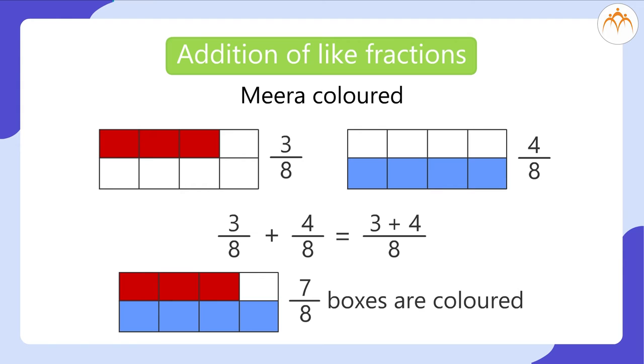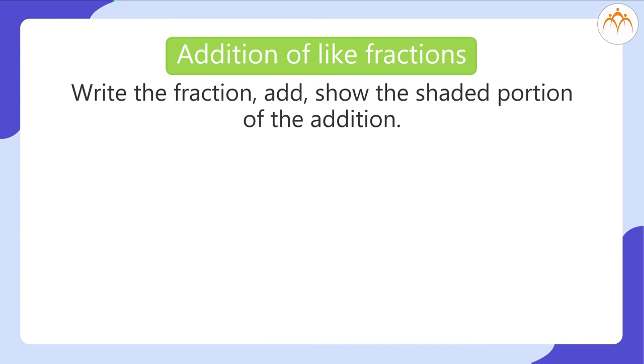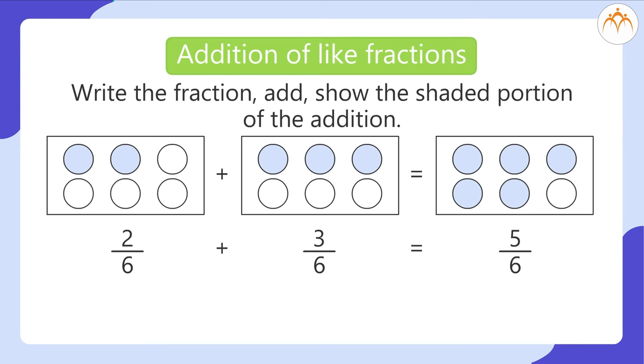Answer is 7 eighths boxes are colored. Write the fraction, add them and show the shaded portion of the addition. From the above example, addition of like fractions is well explained. 2 by 6 plus 3 by 6 is equal to 5 by 6.